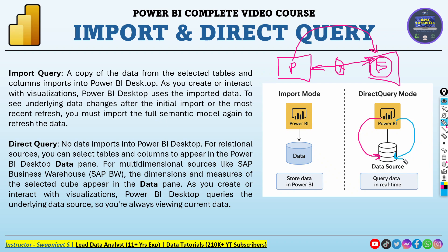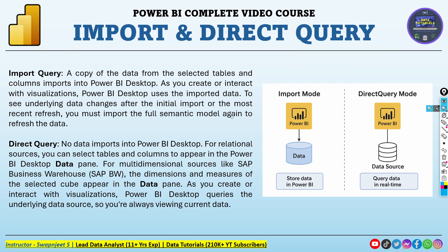In direct query mode, it is directly querying the data — there is no intermediate data created like in import mode. It is directly in contact with your data source, giving you live data. As the PPT states: no data is imported into Power BI Desktop. For relational sources, you select tables and columns in Power BI Desktop and it is directly in contact with your underlying data. Power BI Desktop queries the underlying data source, so you always view current, live data. Those 30 new rows updated in your data source will be directly visible.